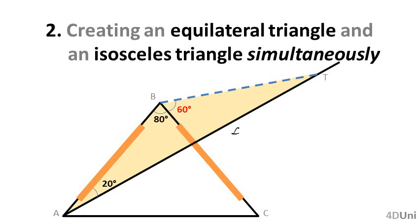Please see triangle ABT. The sum of 20, 80 and 60 degrees is 160 degrees, so to complete the 180 degrees, the measure of angle BTA should be 20 degrees. Triangle ABT is isosceles because the measures of angles BAT and BTA are equal — then BT is equal to BA. You can also see that because BT is equal to BC and the measure of angle CBT is 60 degrees, triangle CBT is equilateral.